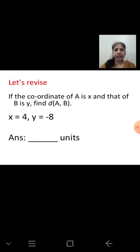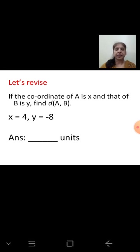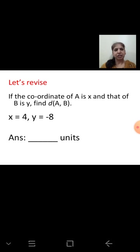We studied about coordinates and how to find the distance between two given points. If the coordinate of A is X, that is 4, and the coordinate of B is Y, that is negative 8, we find the distance by subtracting the smaller coordinate from the greater one. So 4 minus negative 8 becomes 4 plus 8, which equals 12 units.